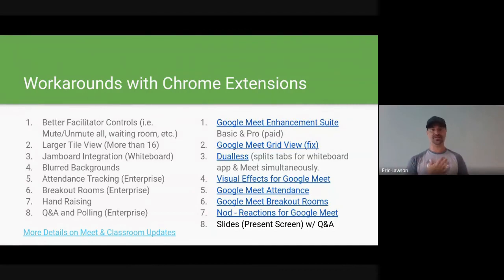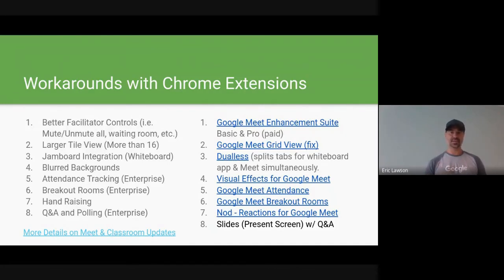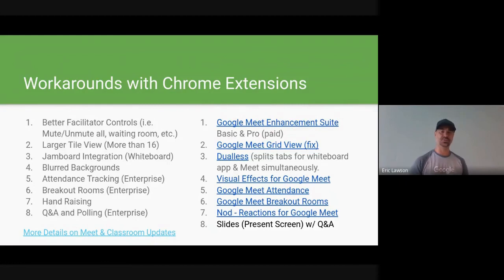For blurred backgrounds, there is a Visual Effects for Google Meet Chrome extension. Attendance tracking, breakout rooms, and Q&A and polling are all part of enterprise, but there are Chrome extensions — Google Meet Attendance, Google Meet Breakout Rooms, and Nod Reactions for hand raising and emojis. My workaround for Q&A and polling right now is to create a slide deck presentation shared with your students where you can do Q&A right in Slides.